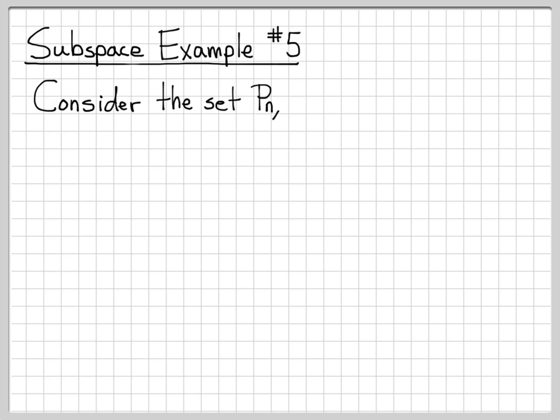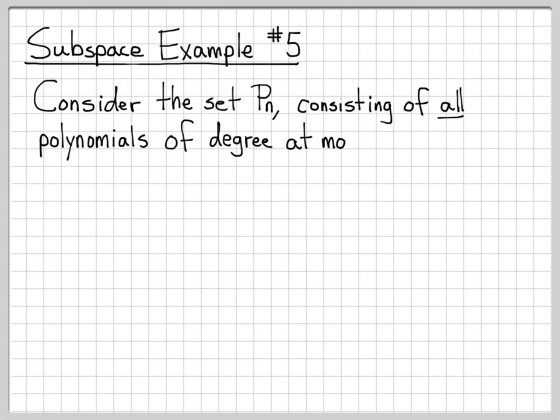So first, let's define the overall vector space we're working with. We're going to work with the set of polynomials denoted as Pn. Pn is a collection of objects consisting of all polynomials of degree at most n.